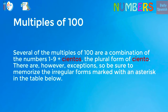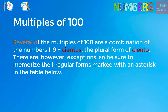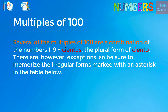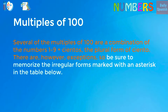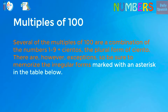Multiples of 100. Several of the multiples of 100 are a combination of the numbers 1 to 9 plus cientos, the plural form of ciento. There are, however, exceptions, so be sure to memorize the irregular forms marked with an asterisk in the table below.